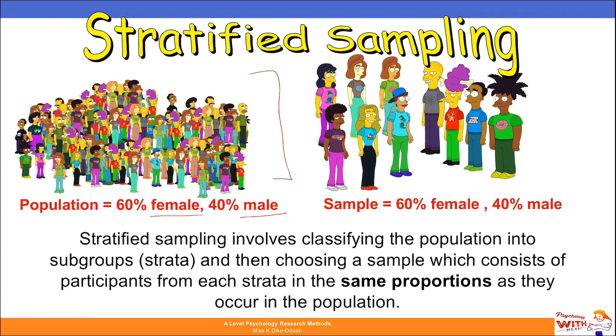Your strata can be anything — your strata can be an age group, your strata can be a profession. The idea is that the proportions must reflect that of the wider population.